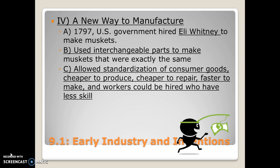In 1797, the US government hired Eli Whitney to make muskets in a factory. Previously, muskets were made by hand by a blacksmith, so if a barrel or trigger broke, you needed someone to custom-build a new one. Instead, Eli Whitney introduced the idea of interchangeable parts — making every part of something exactly the same so it's easier to switch out broken parts. Think of cell phones: all Android phones use USB-C or micro-USB, and Apple phones use a lightning connector — if you lose your cable, you just buy a new one.